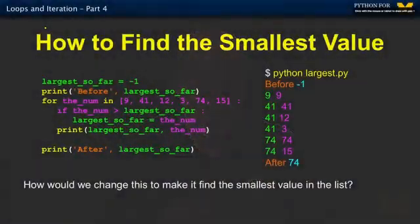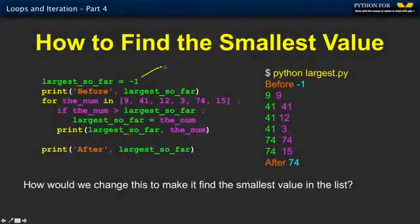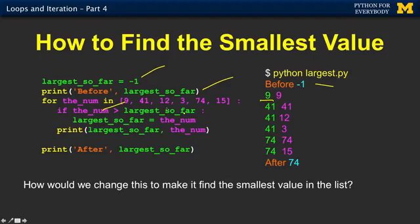We've done a bunch of different things: we found the largest, we searched for a value, we did sums, we did averages, and now we're going to do the smallest value. Let's review what we did for the largest value. We have a variable called largest so far that we set to negative one, print it out — it starts at negative one. We go through the loop: nine, and the largest so far is nine; then 41, we like that better; then 12 — we don't like that; three — we don't like that; 74 — we keep that; 15 doesn't make a difference. It pops out and we get 74. That is the largest.